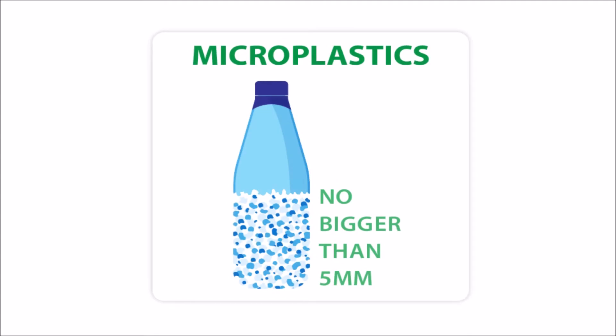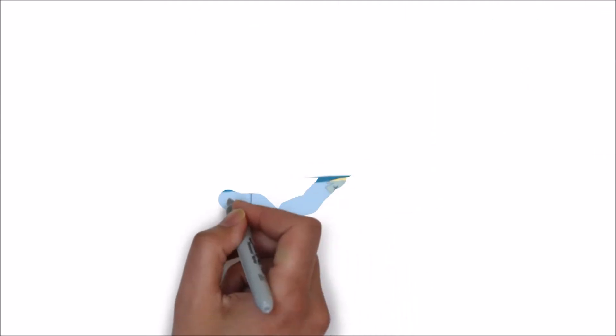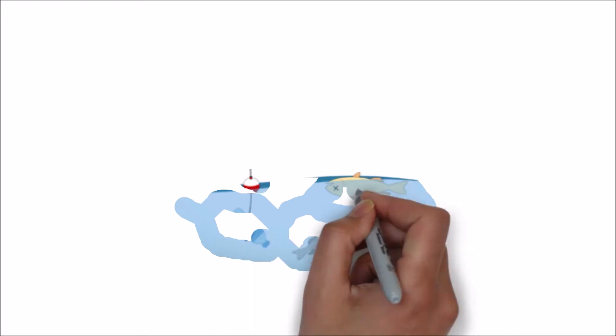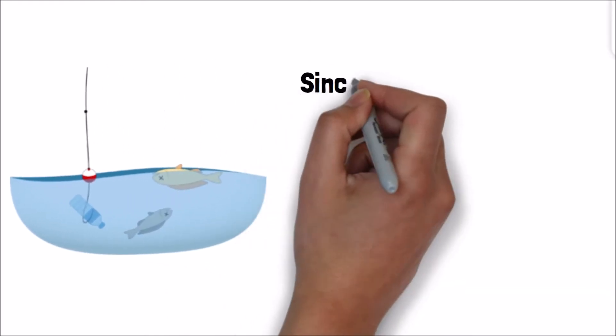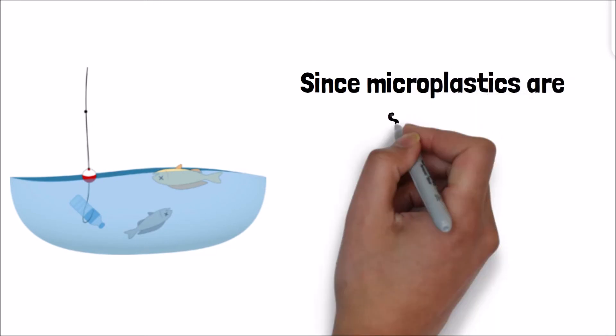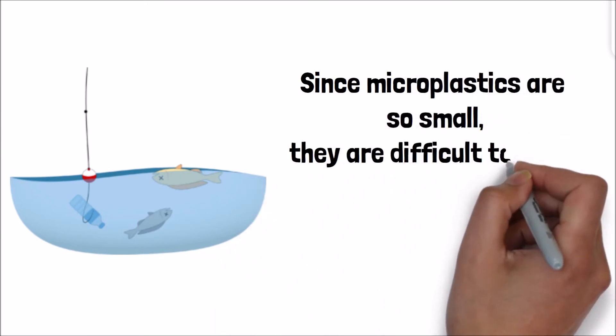The majority of microplastic pollution comes from the particles created when plastic garbage begins to degrade in our oceans. Since microplastics are so small, they are difficult to filter out and affect many sea life organisms.